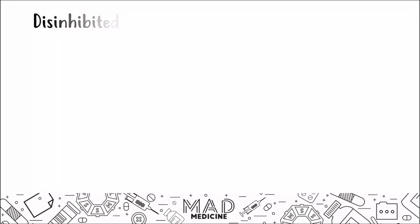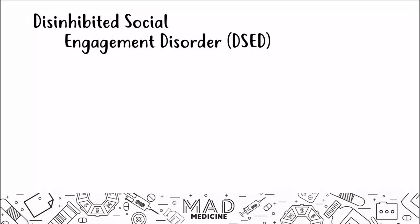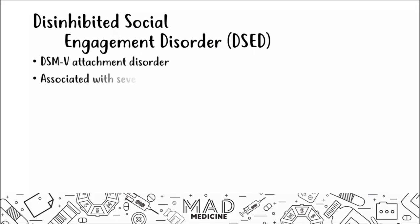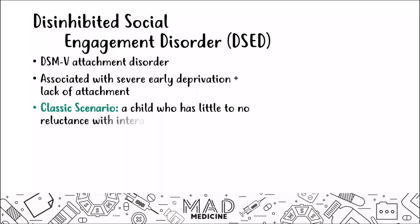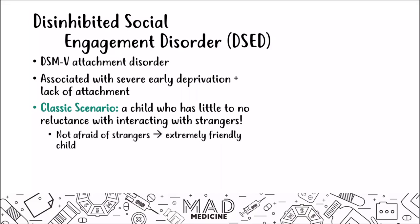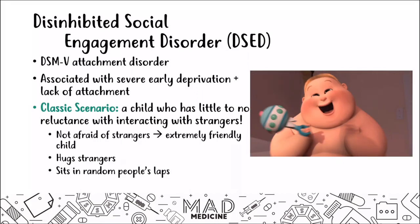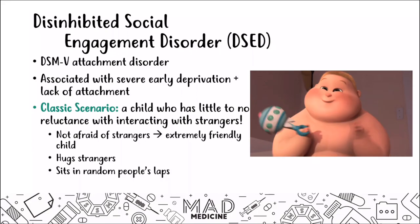The next attachment disorder is Disinhibited Social Engagement Disorder, or DSED. This is also a DSM-5 attachment disorder associated with severe early deprivation, but the classic scenario is completely opposite to RAD. In DSED, the child has very little to no reluctance meeting or talking to strangers — they're extremely friendly, not afraid of strangers, and will hug strangers or sit on their laps without hesitation. Think of DSED as a very happy baby, like the one from Boss Baby.